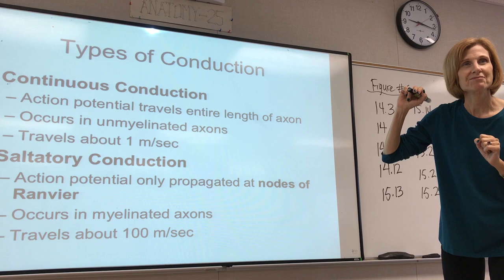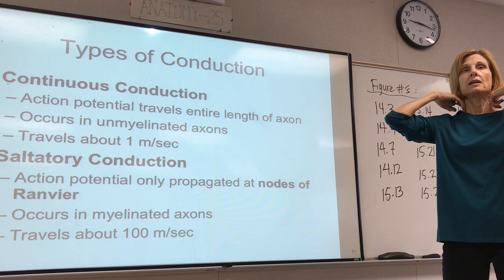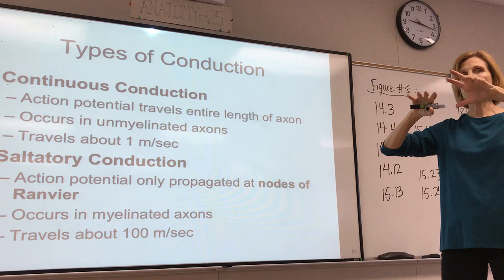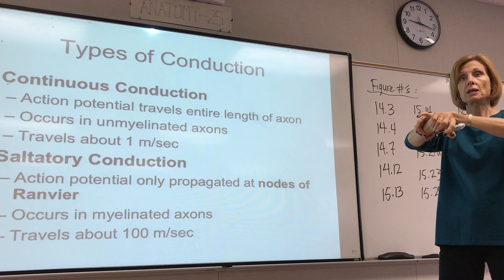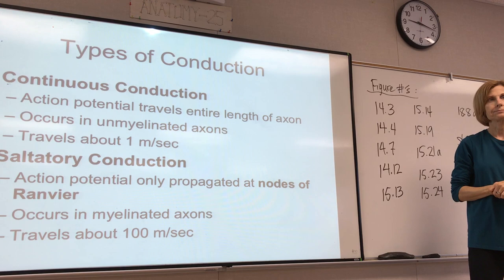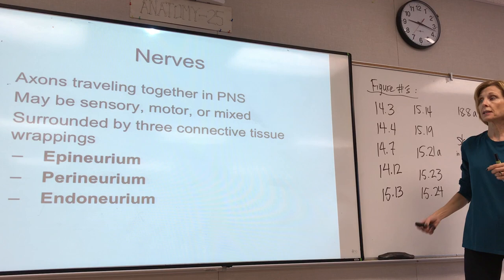The brachial plexus is where the spinal nerves, as they exit the spinal cord, literally kind of unravel, reorganizing themselves to form new nerves that will go into the upper extremity. It's called brachial because the nerves supply the upper extremity.